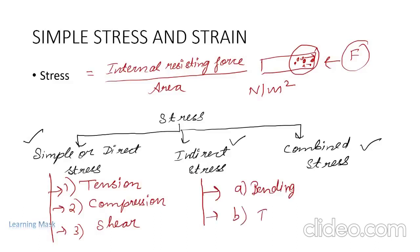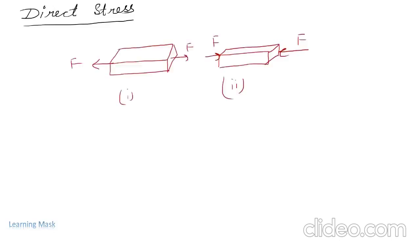Now we will understand direct stress. If a force acts on an object directly — that is, if the force acts normal to the cross-sectional area — then that force is known as a direct force, and it will develop a direct stress. You can observe in this image that force is applied directly to this surface, and the cross section has the force acting perpendicular to it.